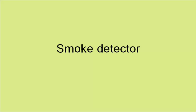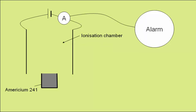The smoke detector. A smoke detector basically consists of an ionisation chamber, at which is directed an alpha source, generally americium-241, as it has a very long half-life, a power supply to produce a current, and an alarm.